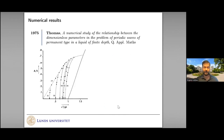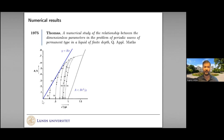This result is related to some numerical studies from the 70s, one by Thomas for example. Thomas computed different periodic solutions — these are points in a diagram where he computed the amplitude over the mean depth on the vertical axis and the square of the speed over gh on the horizontal axis, where g is the gravitational constant. You can see that there is a tangent line according to these computations, meaning the amplitude is bounded by this constant b — the slope — times the square of the speed over g. This was confirmed numerically already in the 70s.